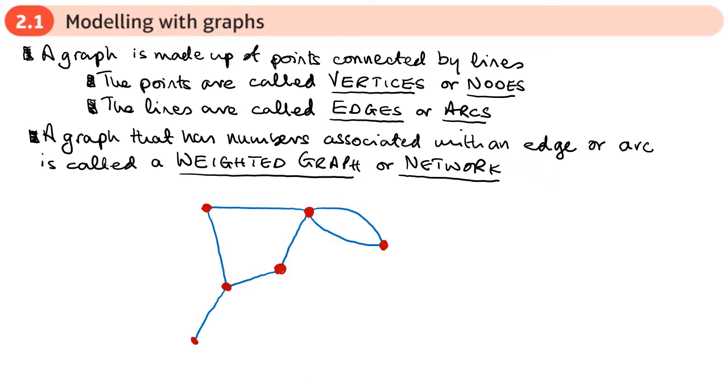So here's an example of a graph. These red dots here represent the nodes. So I can see that this graph has one, two, three, four, five, six vertices or nodes. And the blue lines represent the edges. I've got one, two, three, four, five, six, seven edges in this graph.